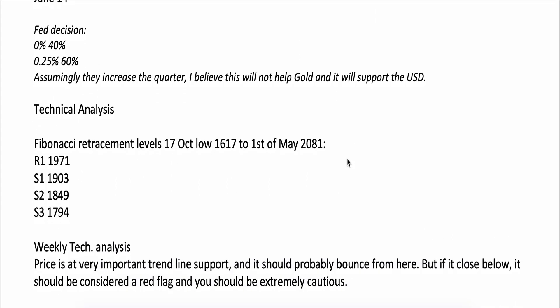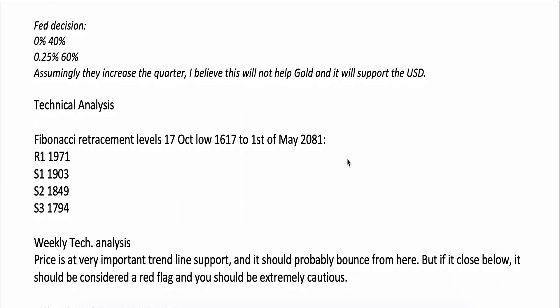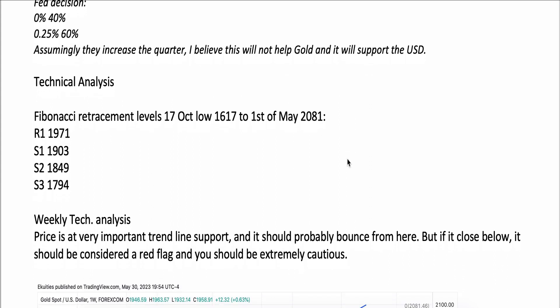From a technical analysis perspective, we have the Fibonacci retracement levels between the October 17 low at 1617 and May 1st at 2081. The resistance is at 1971, and we have three supports at 1903, 1849, and 1794.